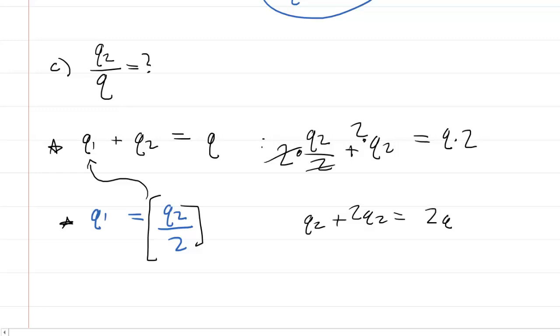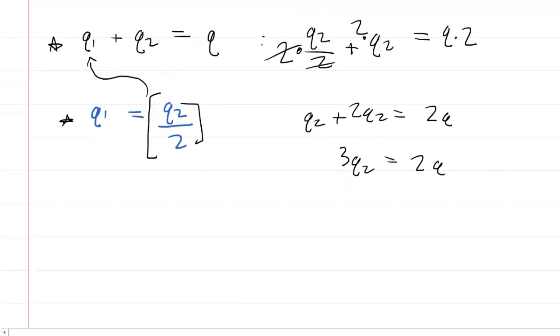The left side, if we add the like terms, becomes three Q2 equals two Q. We could divide both sides by Q. So then we have three Q2 over Q is equal to two. And finally, we'd multiply both sides by one third. So these threes would cancel, and we have the correct answer to part C. Q2 divided by Q is equal to two thirds. So that would be the fraction of the charge Q that ends up on sphere two.